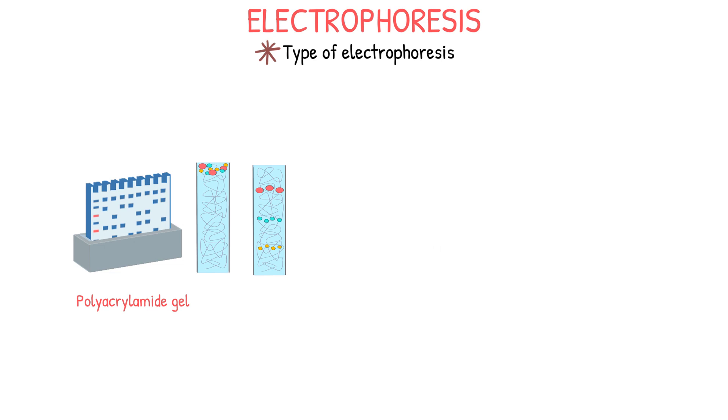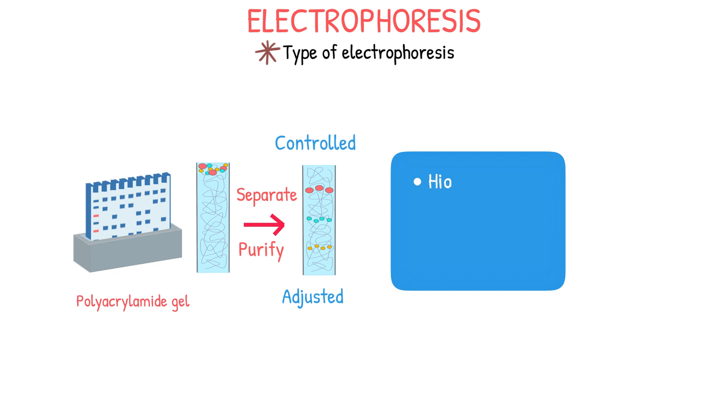Polyacrylamide gel electrophoresis, or PAGE, uses polyacrylamide gel as a separation medium for separating and purifying proteins into different protein bands, allowing proteins to be separated and purified according to their size, charge, and shape differences. In this process, the pore size of the polyacrylamide gel can be controlled. The pore size can be adjusted by changing the gel concentration and ratio to separate proteins of different sizes. Compared to agarose gel electrophoresis, PAGE has higher resolution and sensitivity, and can separate proteins with very similar molecular weights.